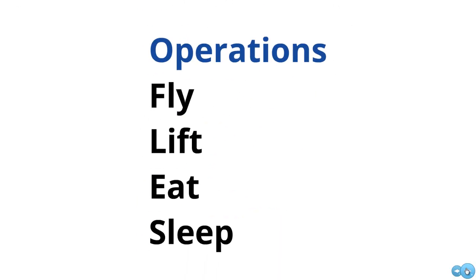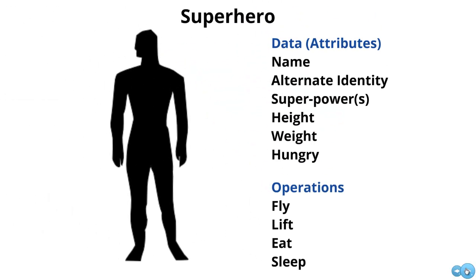In terms of operations for a superhero, there could be a lot of things — a superhero could fly, maybe lift some particular object, maybe eat, maybe sleep. These are more mundane things, but they are operations a superhero could do. In the case of eating, maybe this relieves the superhero from being hungry, if hungry was a Boolean state value. So a class is just a blueprint or a template to describe something in terms of its data and its operations.